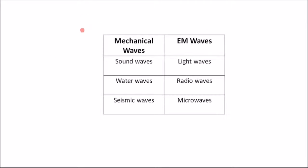There are two main categories of waves. The first is mechanical waves, and then we have electromagnetic waves, or EM waves for short.